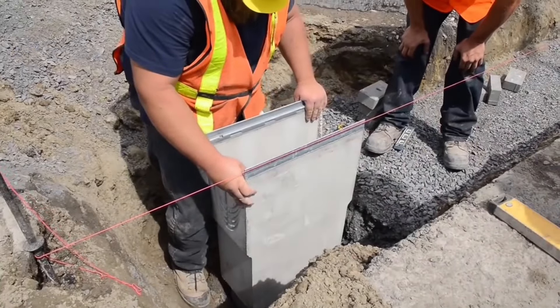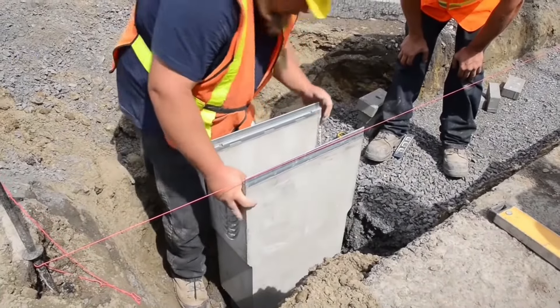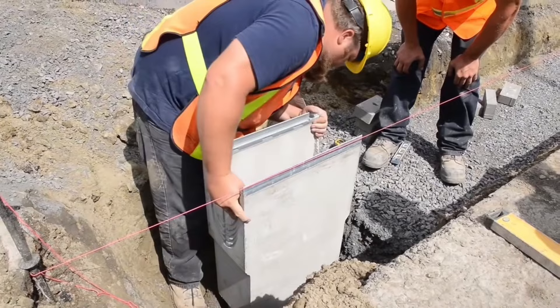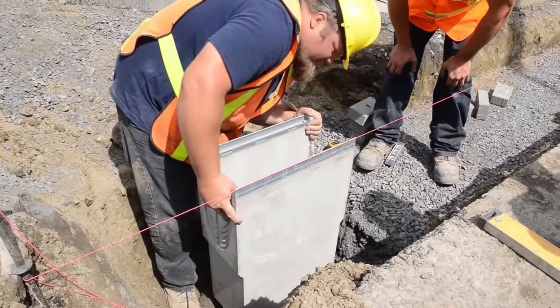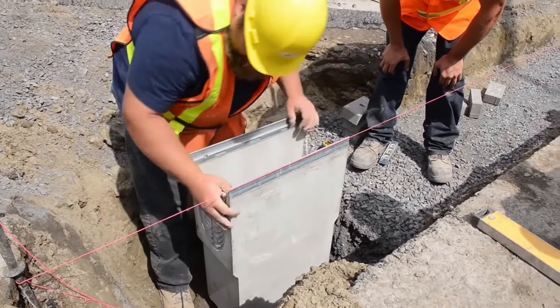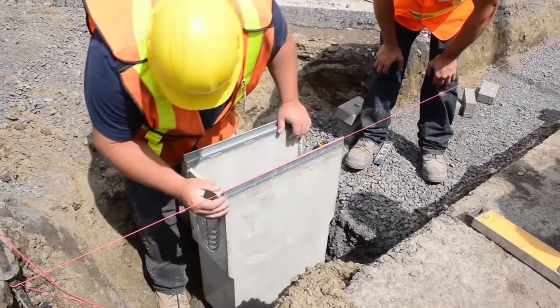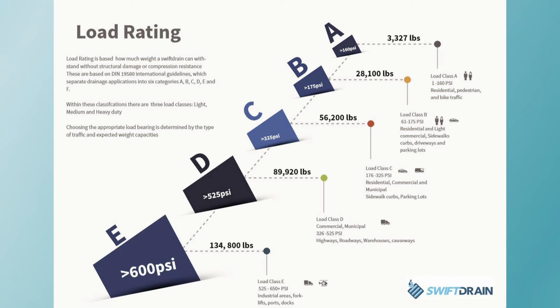It's essential to consider load ratings to ensure the drain can handle the expected traffic without issues. Load ratings come in six different classes — A, B, C, D, E, and F — ranging from light-duty pedestrian to extra-heavy-duty airport-rated trench drains.